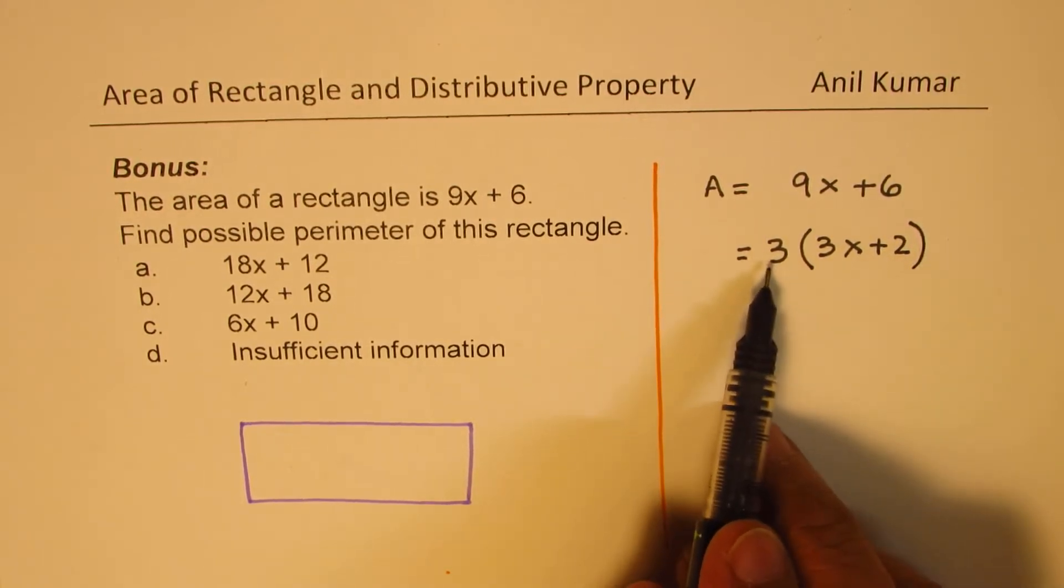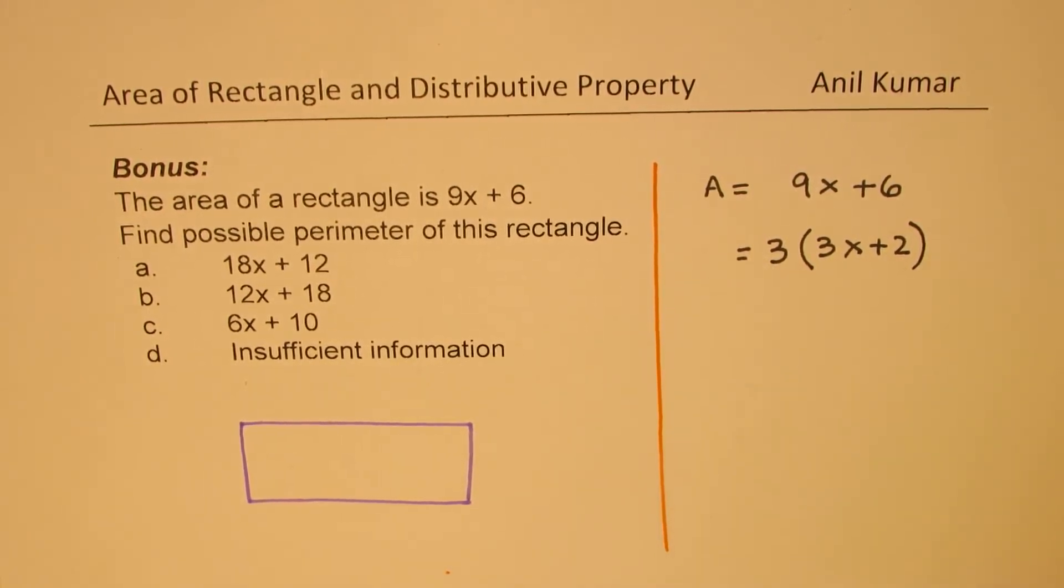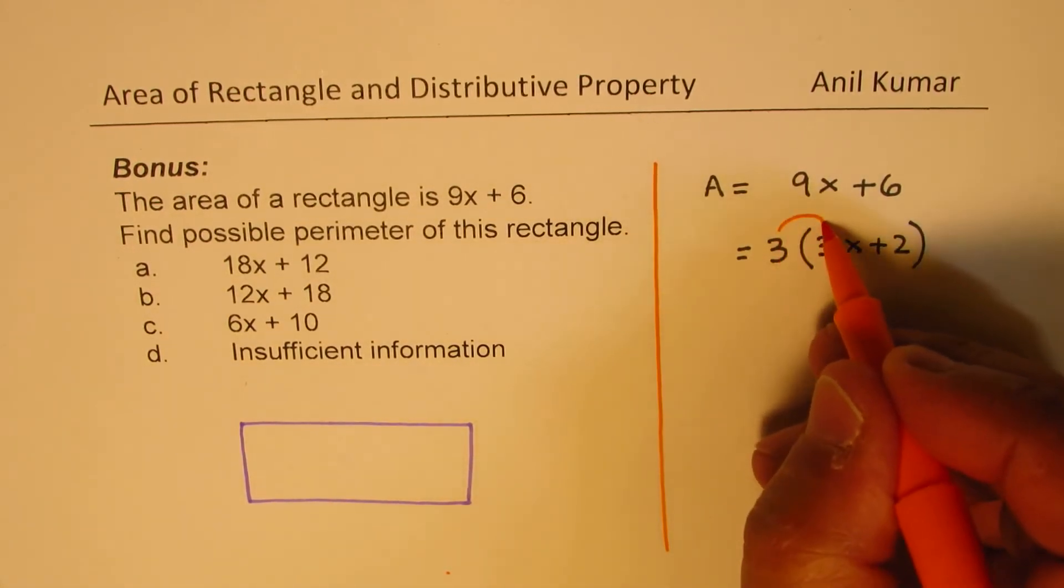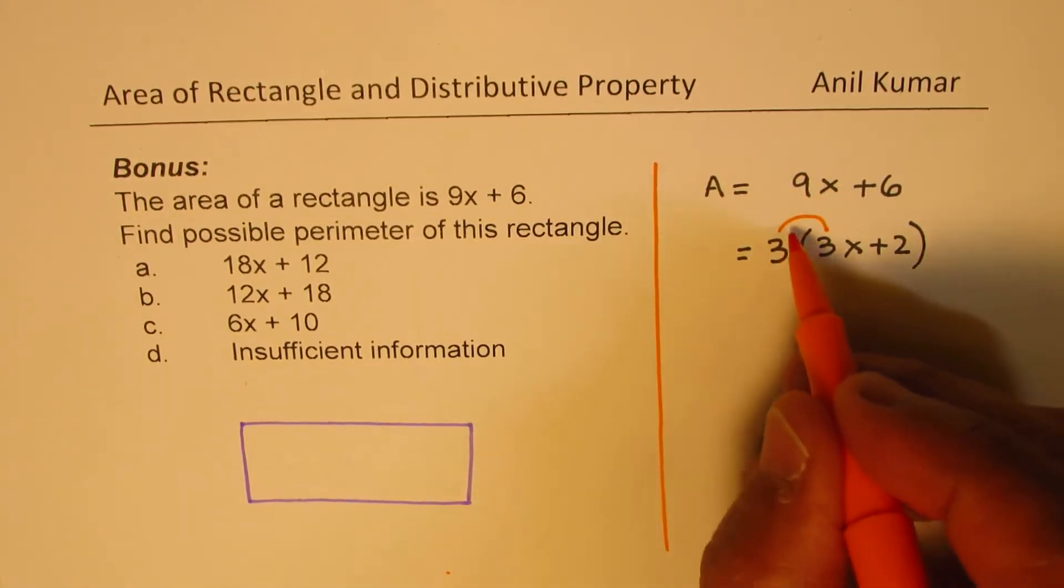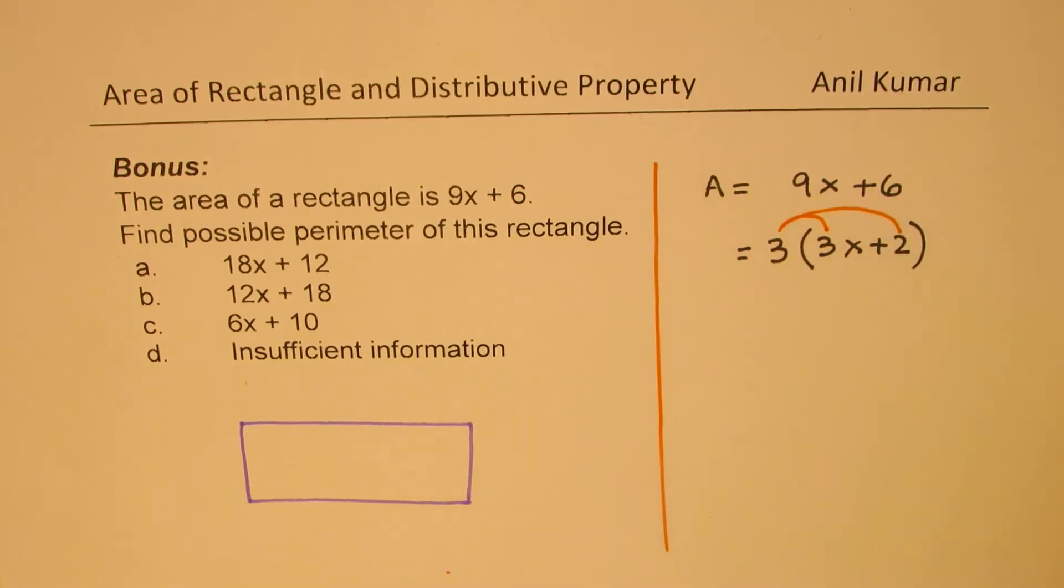Now clearly, if you apply the distributive property, 3 times 3 gives us 9, so we get 9x. And 3 times 2 gives us 6. So that works.